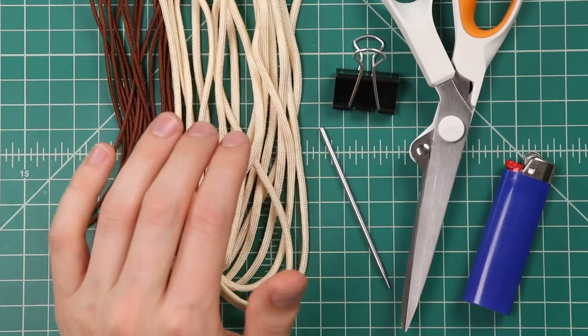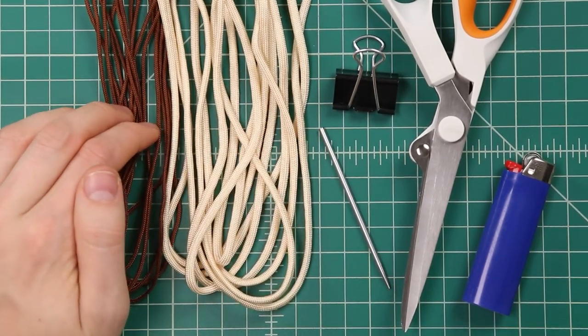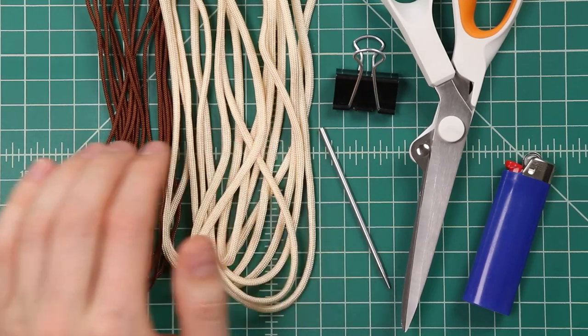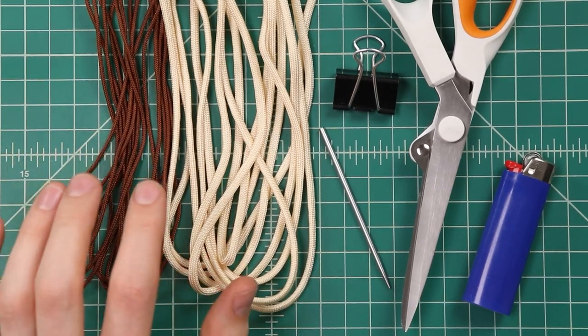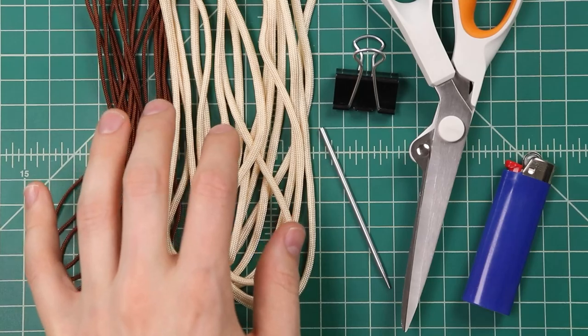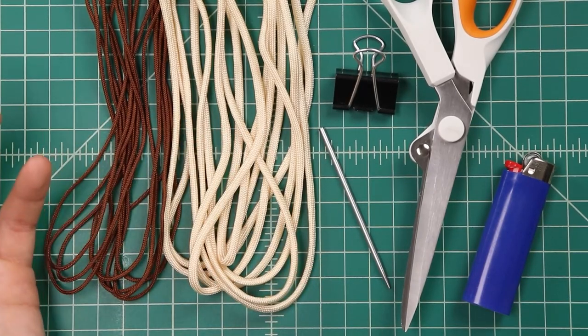For this project, you're going to need some 550 cord and also some 95 cord. This is in color cream, and we've got chocolate brown. You'll need about seven feet of each, but I've got 10 feet of each here, so you can see how much I cut off at the end.